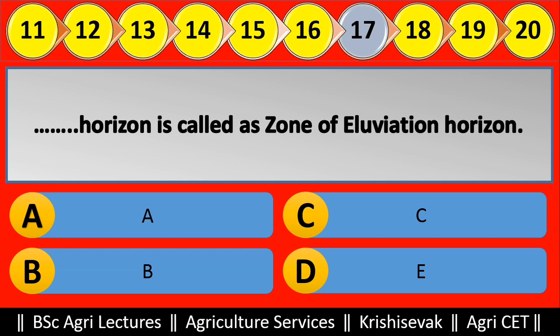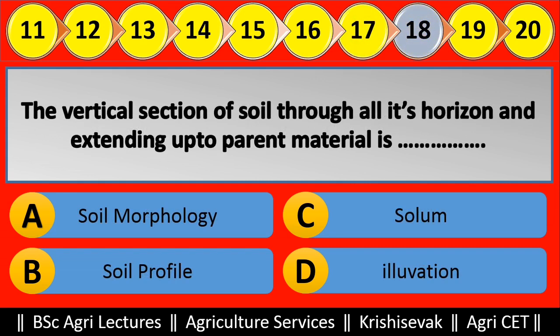Question 18: The vertical section of soil through all its horizons extending up to parent material is blank. Options are: (a) Soil morphology, (b) Soil profile, (c) Solum, (d) Eluviation. Right answer is Soil profile, option B.